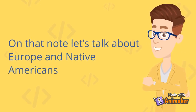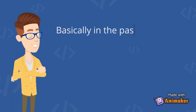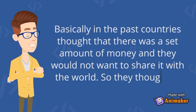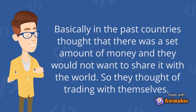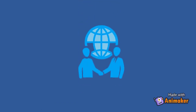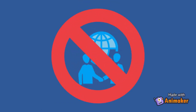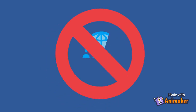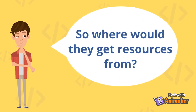What is mercantilism? On that note, let's talk about Europe and Native Americans. Basically, in the past, countries thought that there was a set amount of money and they would not want to share it with the world, so they thought of trading only within themselves. Mercantilism is a policy where a country must export more than it imports. People did this because they wanted more money rather than letting other countries get more. The Europeans had strict rules where you should sell more than you buy. People were punished if they bought from other countries, because that was seen as sharing their wealth.